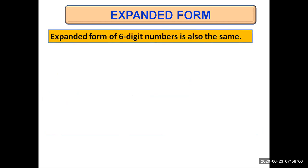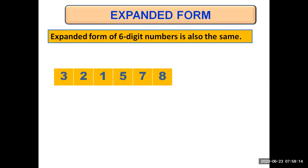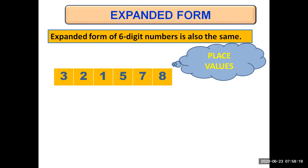Expanded form of six digit numbers — today's topic — is also the same as we've been doing previously. For example, we have the number 321578. First of all, write the place values. I keep saying it again and again: write the place values first so that you know by which number you are going to multiply each digit to get its value. Writing place values from the ones: eight is at ones place, seven at tens place, five at hundreds place, one at thousands place, two at ten thousands, and three at hundred thousands.